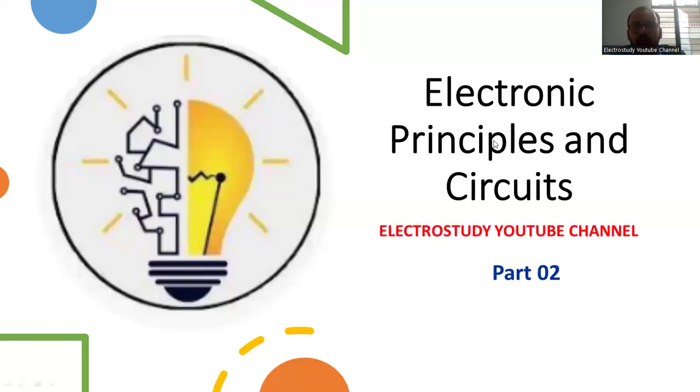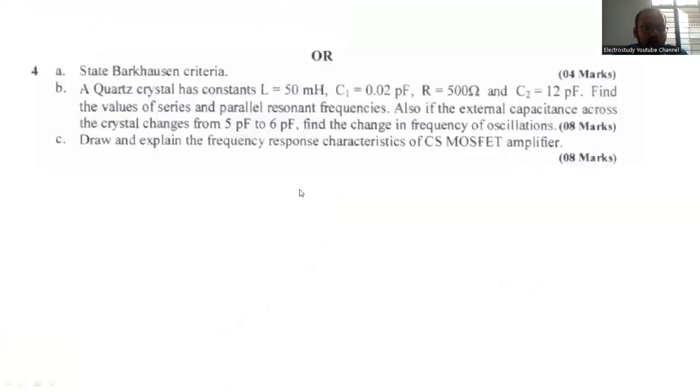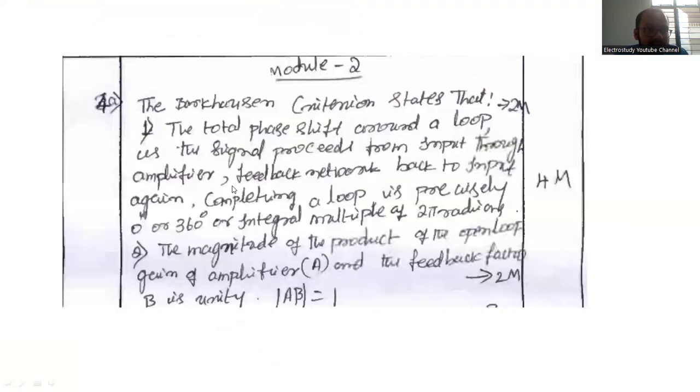Welcome to the second part video of question paper discussion for the subject electronic principles and circuits. Question number 4A, state Barkhausen criteria.